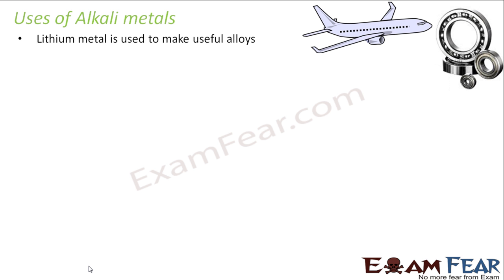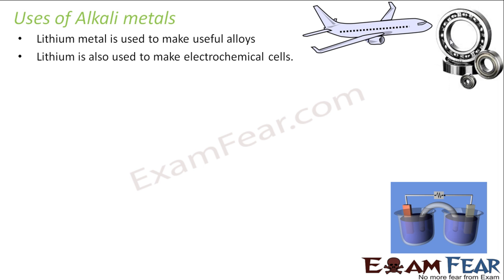Alkali metals are used to make alloys. These alloys are used to make aeroplanes and lightweight metals. They are also used to make bearings and are used in industries.